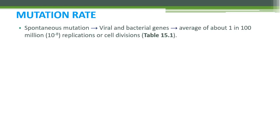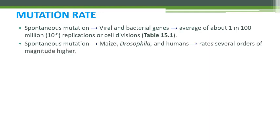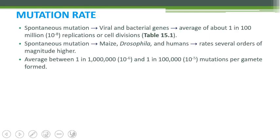In viral and bacterial genes, the mutation rate is about 1 per 100 million — that is 10 to the power of minus 8 — per replication or cell division. In higher organisms such as maize, Drosophila, and humans, the rates of spontaneous mutation are higher: 1 in 1 million, that is 10 raised to the power of minus 6, or even 1 in 0.1 million.